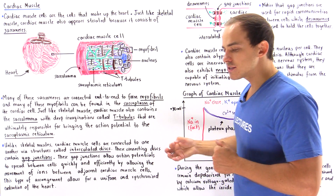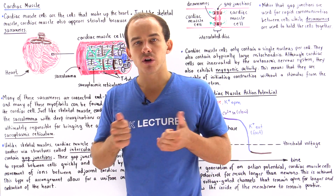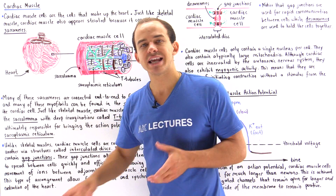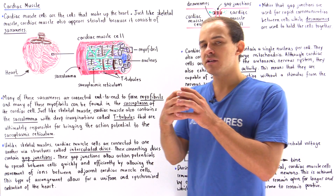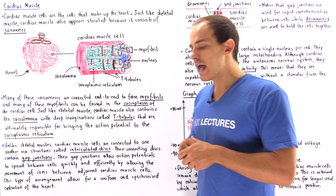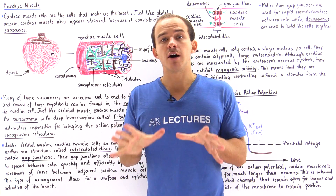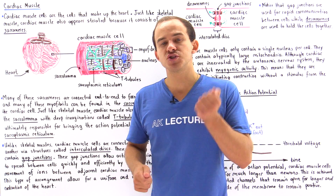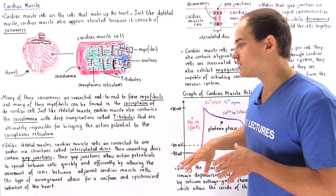These two cells are connected by regions called intercalated discs. Intercalated discs are connecting regions that contain two important types of junctions. One is the gap junction — a channel that connects one cell to the adjacent cell and allows for quick and uniform propagation of the action potential by permitting the movement of ions between adjacent muscle cells.